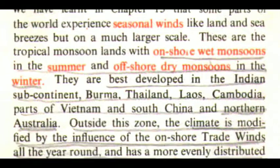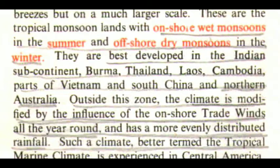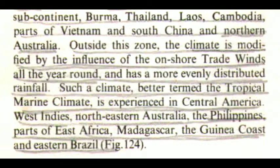Outside this zone, the climate is modified by the influence of the onshore trade winds all the year round, and has more evenly distributed rainfall. Such a climate, better termed the tropical marine climate, is experienced in Central America, West Indies, Northeastern Australia, the Philippines, parts of East Africa, Madagascar, the Guinea coast, and Eastern Brazil.